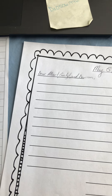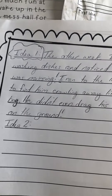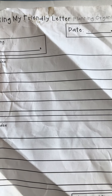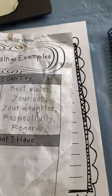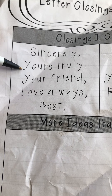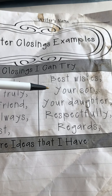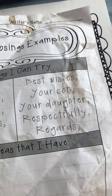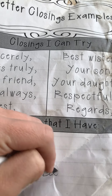Then you grab the writing my friendly letter planning organizer. Remember, I did the first idea. You should have both ideas written, plus your date, your greeting with 'dear whoever you are writing,' and your closing. For the closing, you could do sincerely, yours truly, your friend, your sister, your brother, love always, best wishes, your son, your daughter, respectfully, regards, or love. A lot of times I'll just write 'love, Jamie' — just like that.